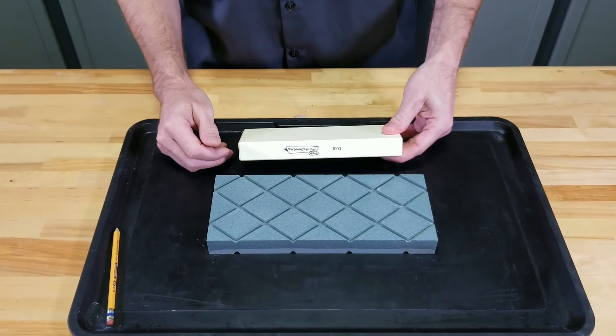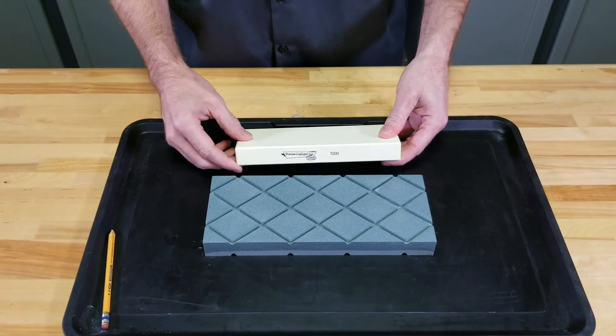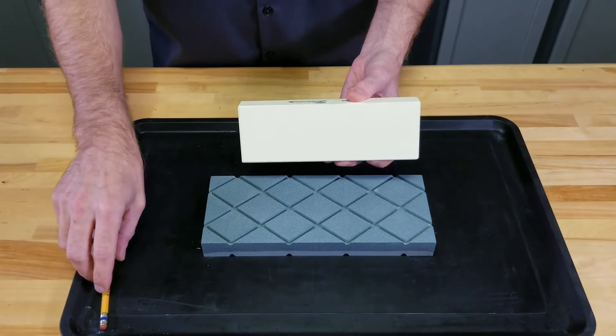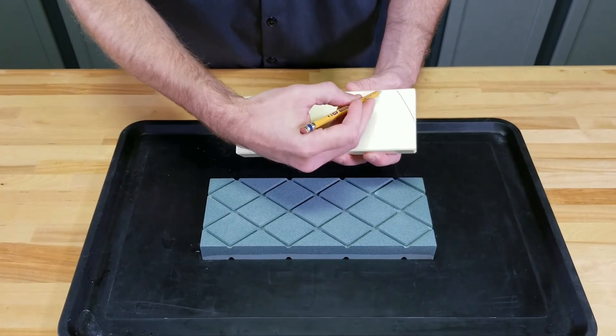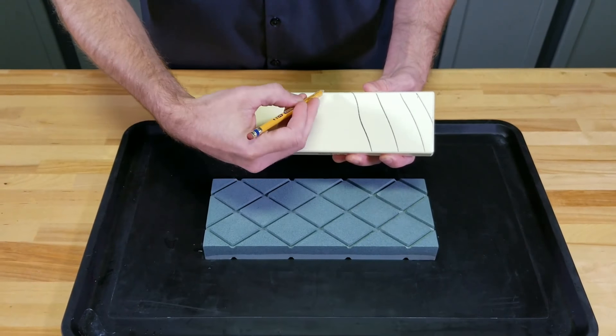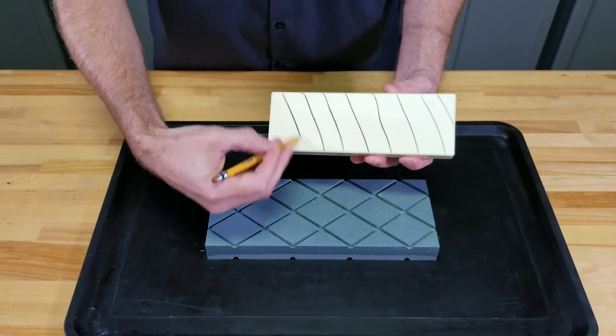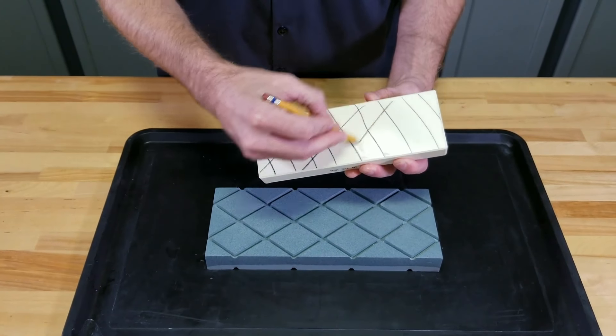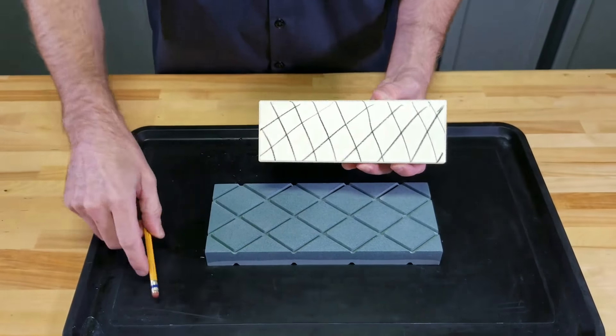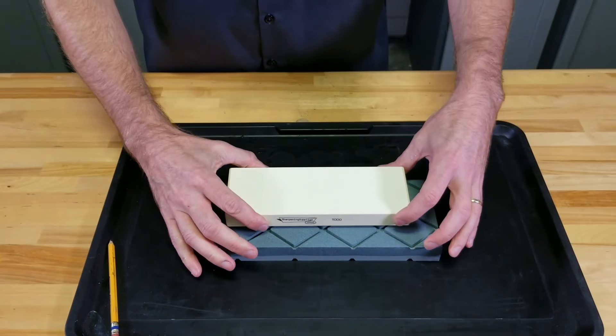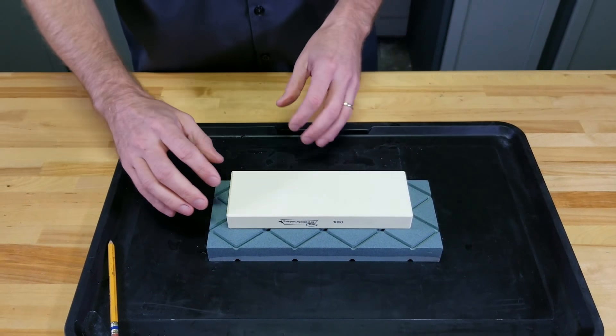We've got both stones good and soaked, so we're ready to go. First step is to take your water stone, using a pencil, draw reference lines over its surface, and set it down on the double-time flattening stone.